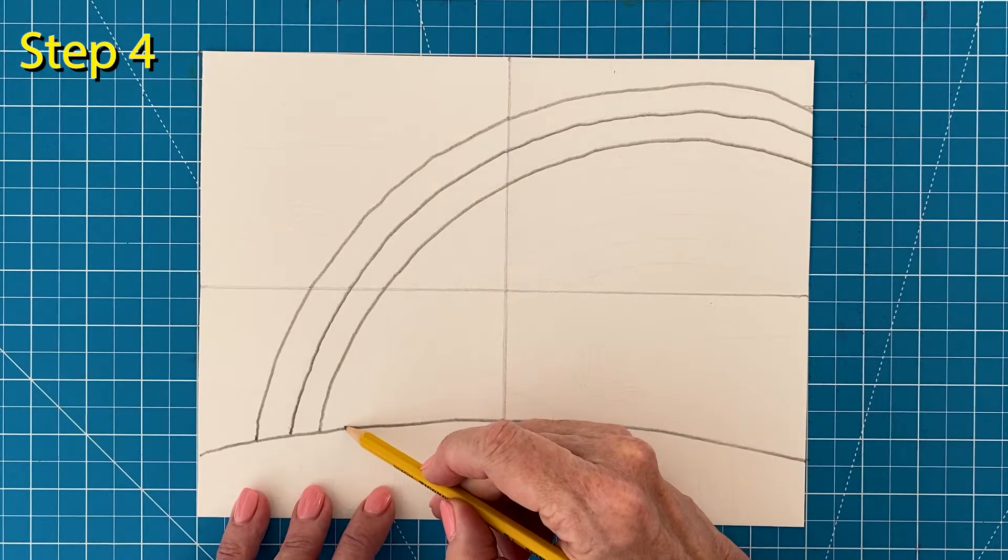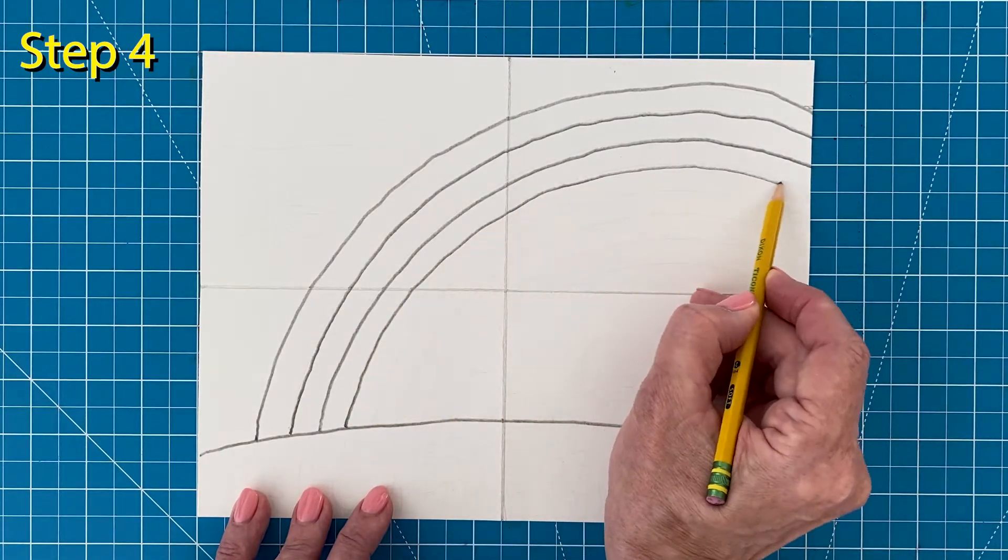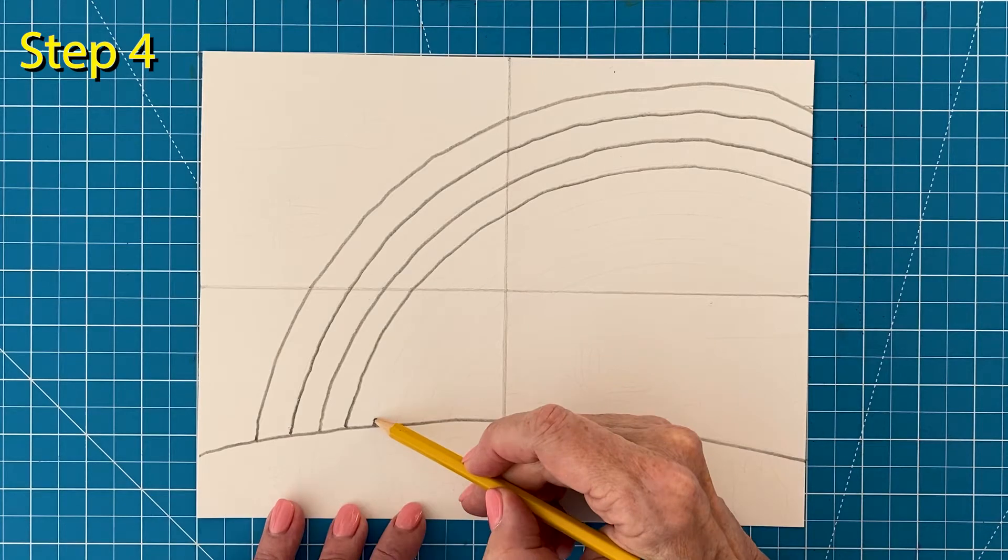Step number four, add a fourth curve below the third and then a fifth curve below that.